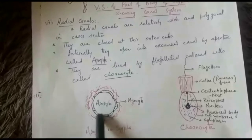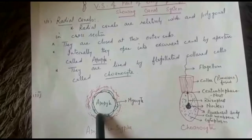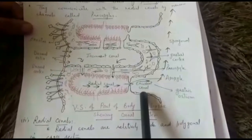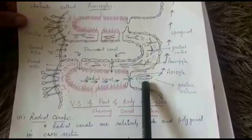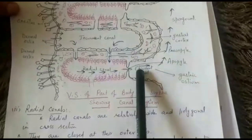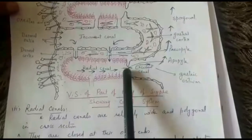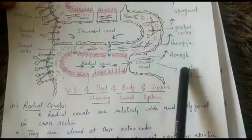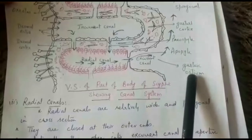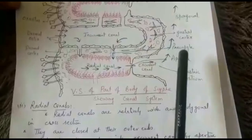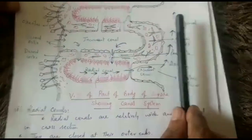The fourth type of canals are the excurrent canals. Excurrent canals are comparatively short canals that lie internal to the radial canals. These canals are lined by pinacocytes. On one side they are connected with the radial canals by means of the apopile, and on the other side they open into the spongocoel by means of a wide aperture known as the gastric ostium.